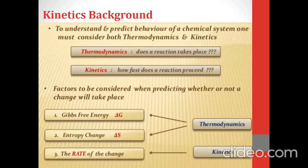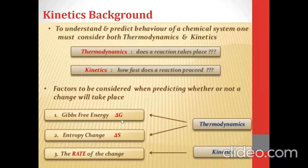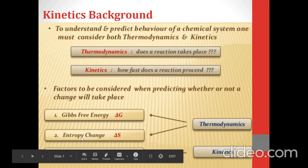To understand and predict the behavior of a chemical system, one must consider both Chemical Thermodynamics and Chemical Kinetics. In Chemical Thermodynamics, the interest is centered around the spontaneity of a chemical reaction and the extent to which the reaction occurs. The spontaneity is decided by the free energy change of the system. If delta G is negative, the reaction is spontaneous; if delta G is positive, the reaction is non-spontaneous. Gibbs free energy change (delta G) and entropy change (delta S) are both related to thermodynamics.